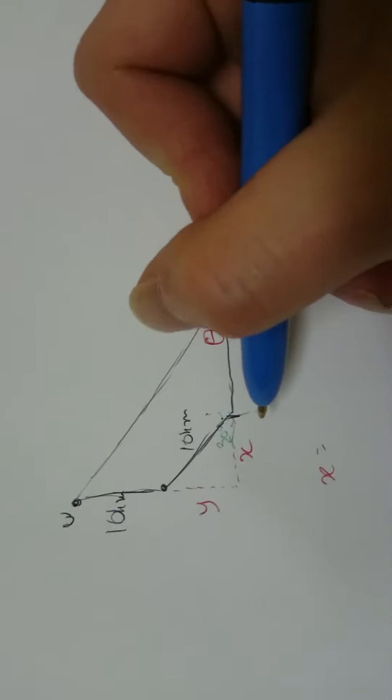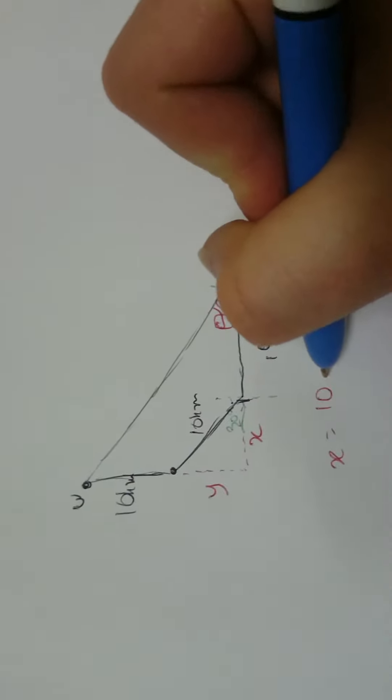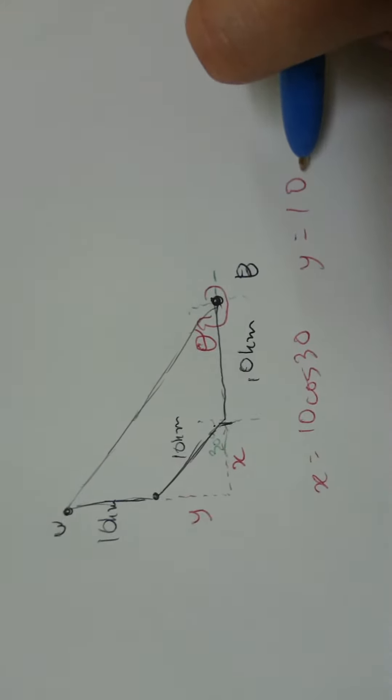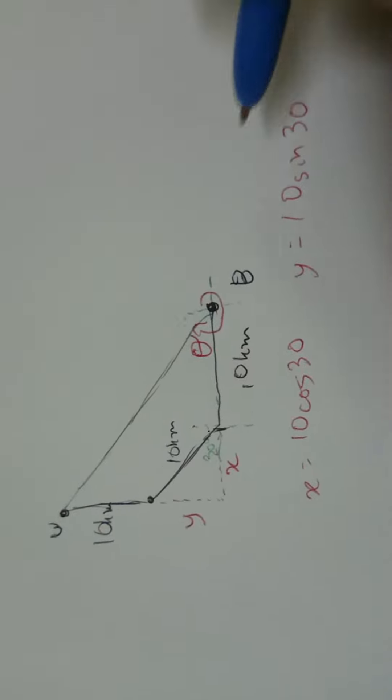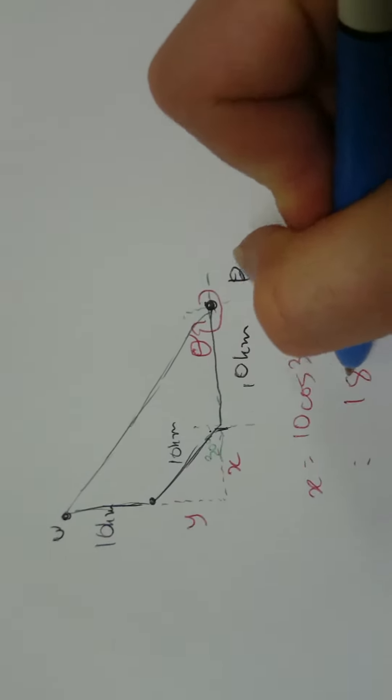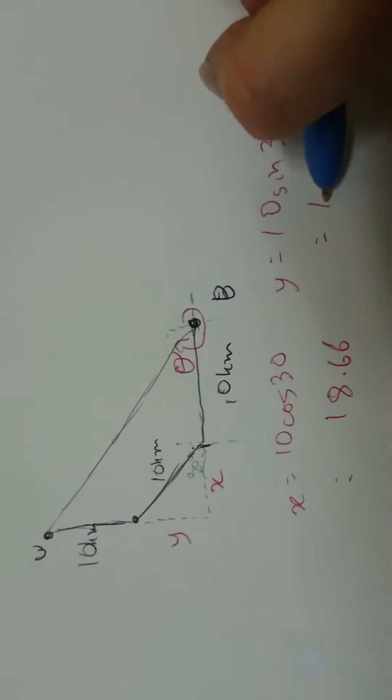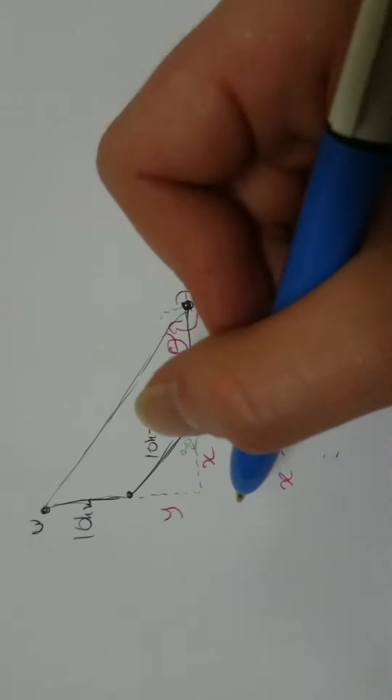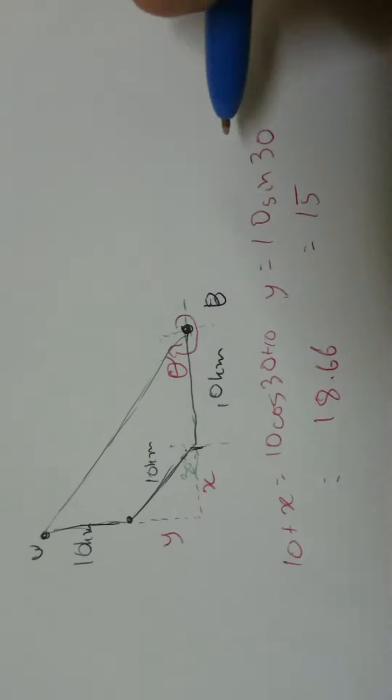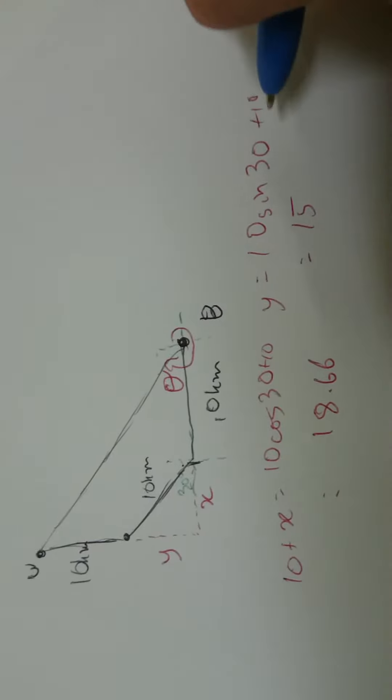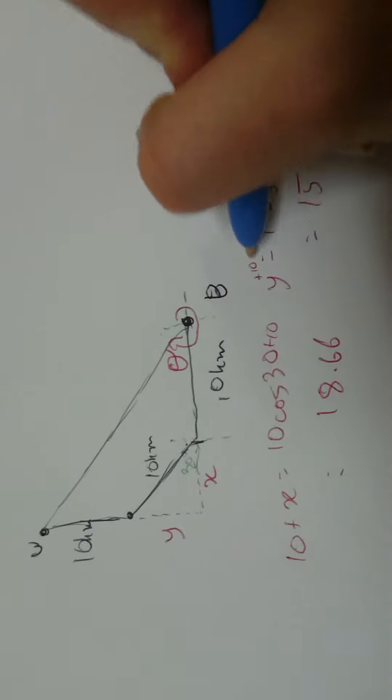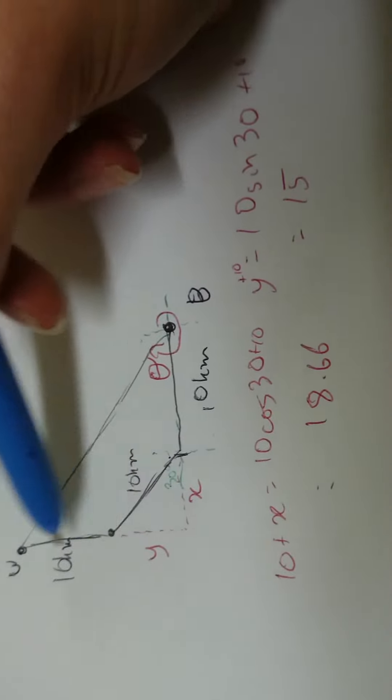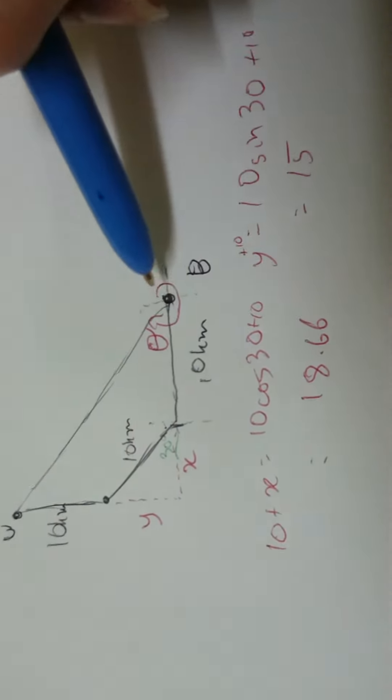So, x equals 10 times cosine of 30, and y equals 10 times sine of 30. And that one comes out at 18.66, and this one comes out at 15. Oh sorry, this one comes out at 8.66, but 10 plus that. That gives us the total side. So, 18.66 is the distance, sorry, 15 is the distance here. 18.66 is the distance here.